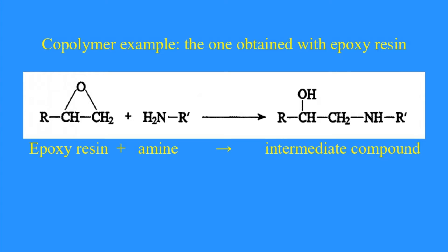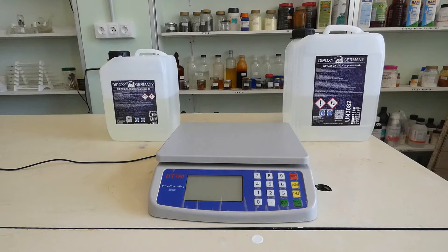This intermediate compound can react through the nitrogen, through a radical or through another radical, with another epoxy group or with another amine group and so on. The result is a three-dimensional macromolecule that forms a hard solid.